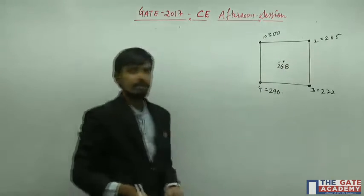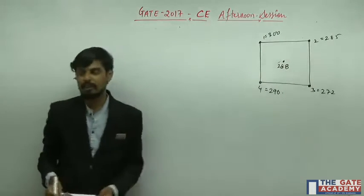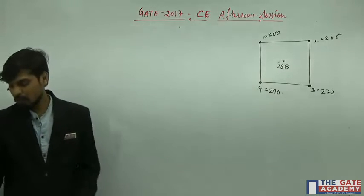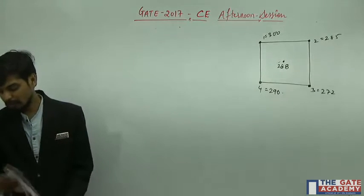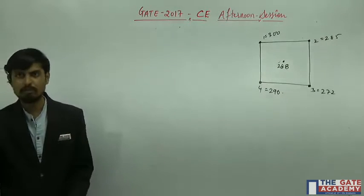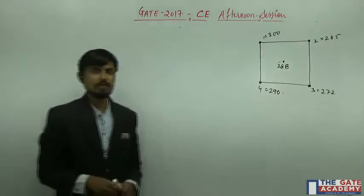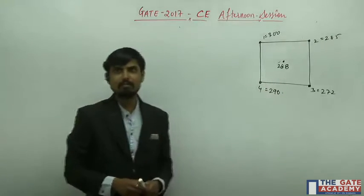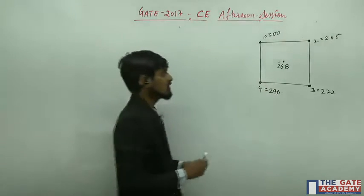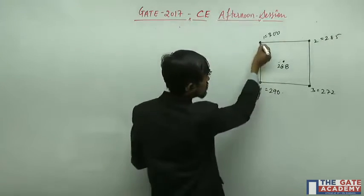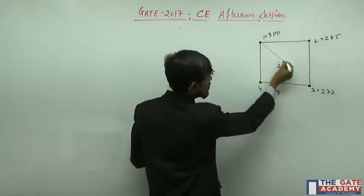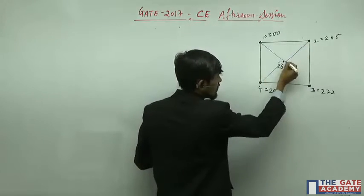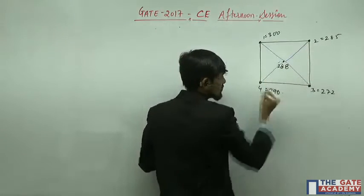What we need to find is mean precipitation using the Thiessen polygon method. To start solving by the Thiessen polygon method, first we divide the area into a convenient number of triangles by joining the stations — these two points, these two stations, and these two stations.